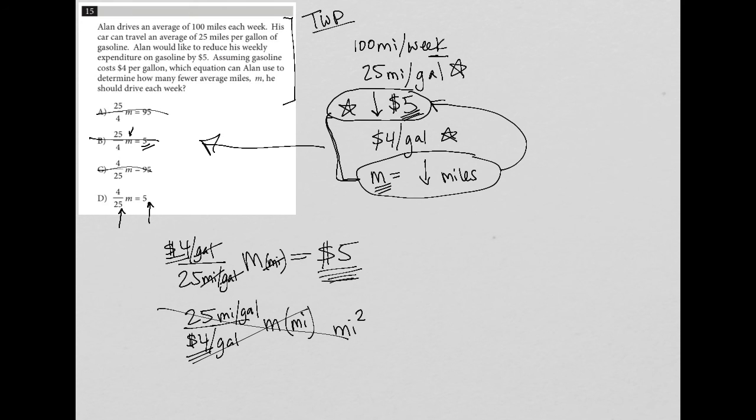The gallons cross out. The miles cross out, leaving me only with the dollars unit. So that makes me pretty comfortable and confident saying that choice D is the correct answer.